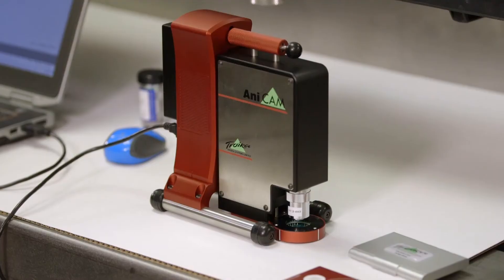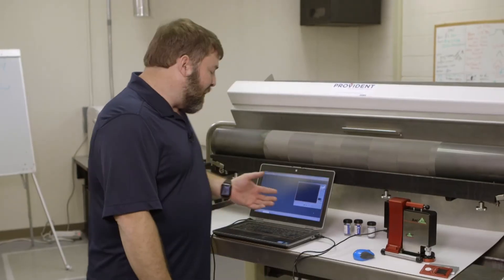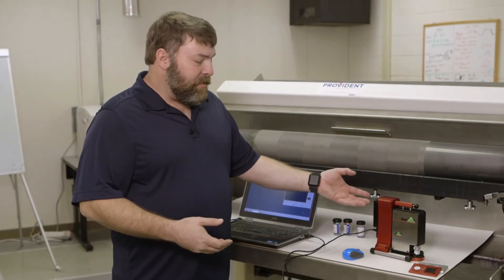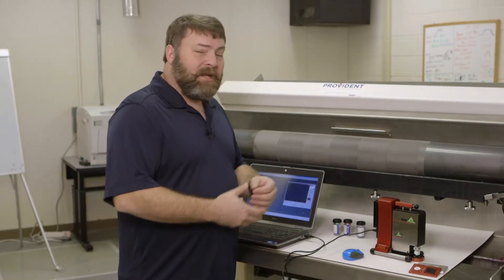To start with, we have an Anticam, we have an analog roll and we have a laptop to run this on. So to start with, we've opened up our analog roll QC program. Now all we need to do is take the Anticam and place it up on the analog roll.